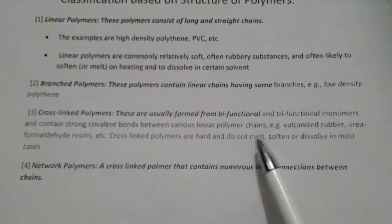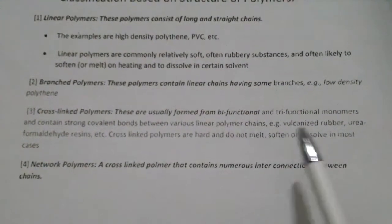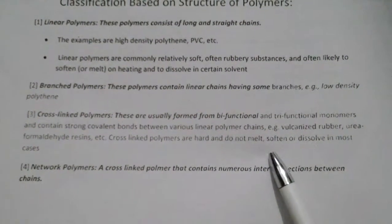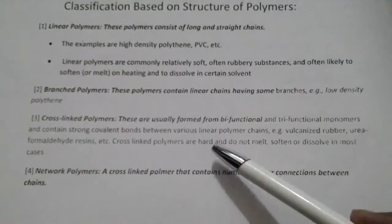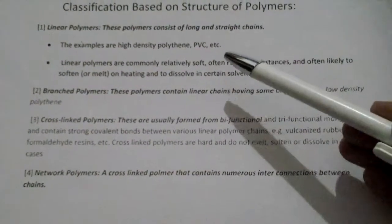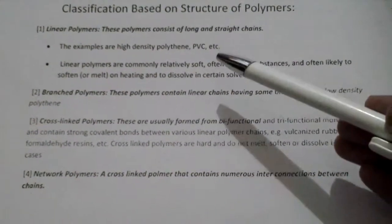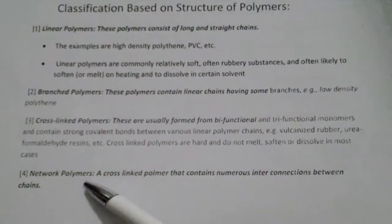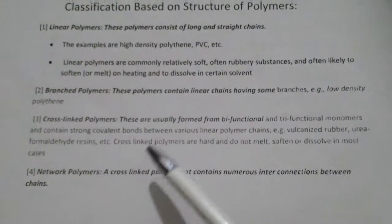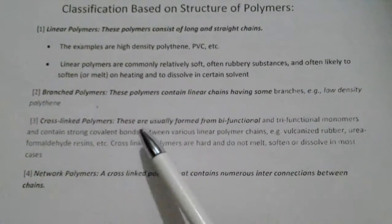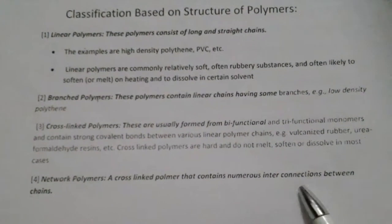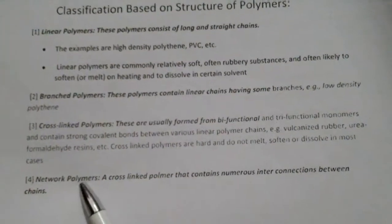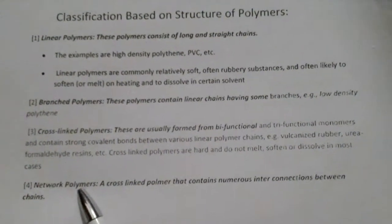That means cross-linked polymers do not melt, soften, or dissolve in most cases — quite opposite properties to linear polymers. The fourth one is network polymers. Cross-linked polymers that contain numerous interconnections between chains come under network polymers.